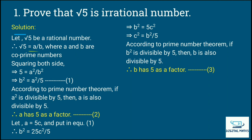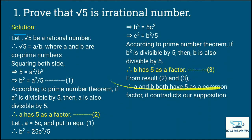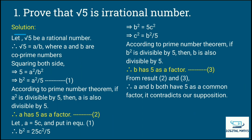Both b and a have 5 as a common factor. But we said a and b are co-prime numbers — because it is in fraction form — so both should have no common factor. This contradicts our supposition. It proves our supposition wrong. So root 5 is not a rational number. Therefore, root 5 is an irrational number.